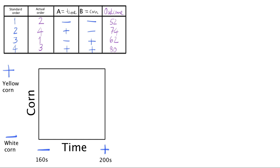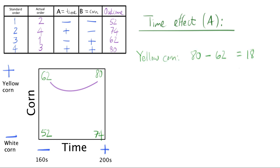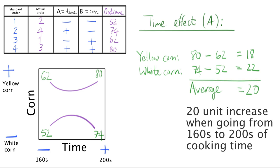Now you are ready to add the outcome variable to this plot. The number 52 goes over here in the bottom left. That's the combination with short times and white corn. 74 goes here at the bottom right for those combination settings. Up here we have 62. And our final value at the top right corner is 80 at long cooking times with yellow corn. Start by considering the effect of time. As cooking time increases, and when using yellow corn, we go from 62 to 80 popped corns. That's an increase of 18 units. For white corn, we see that we go from 52 to 74, an increase of 22 units. So on average, we have a 20 unit increase when cooking time goes from 160 to 200 seconds.